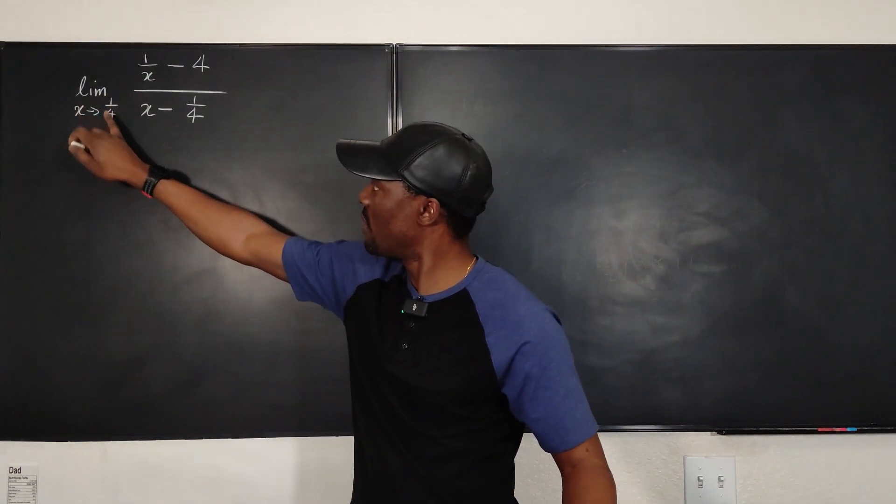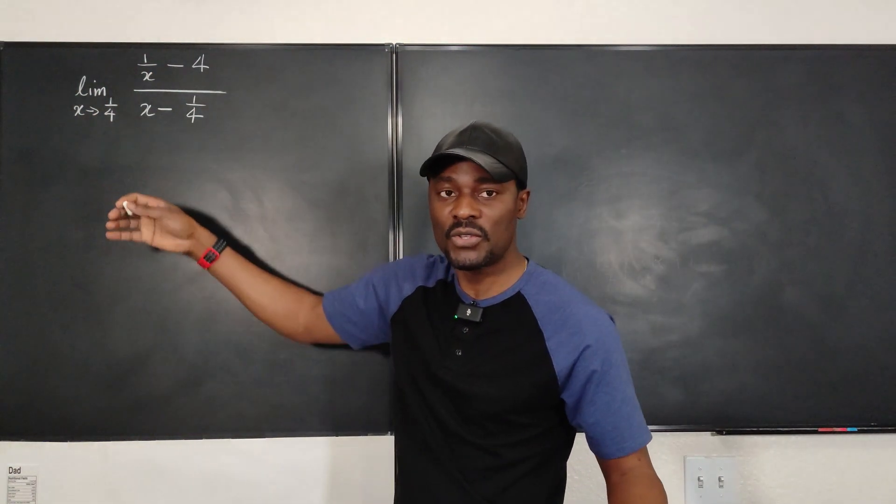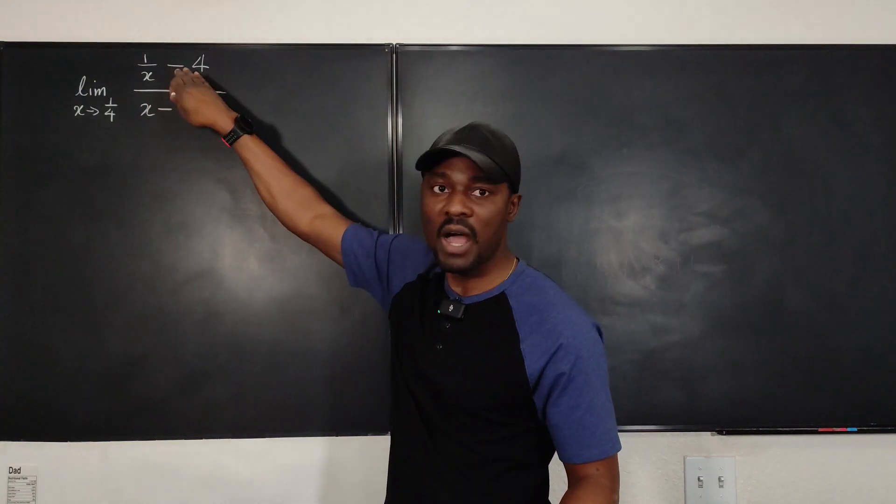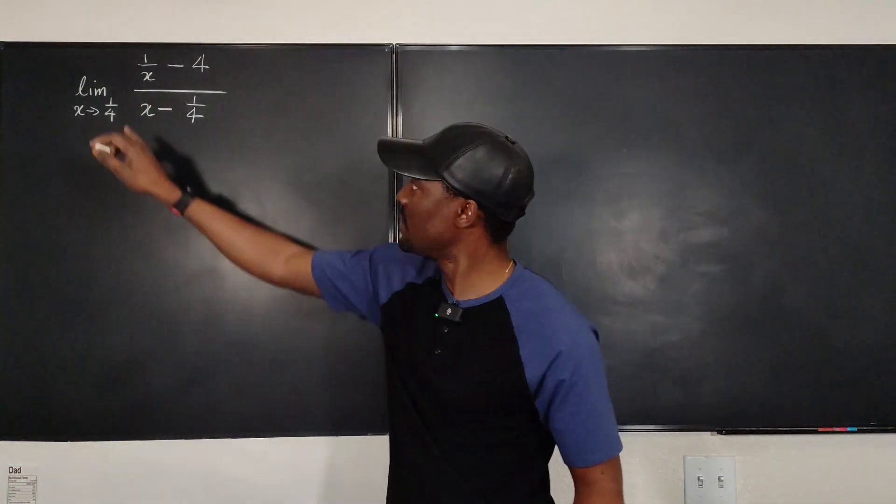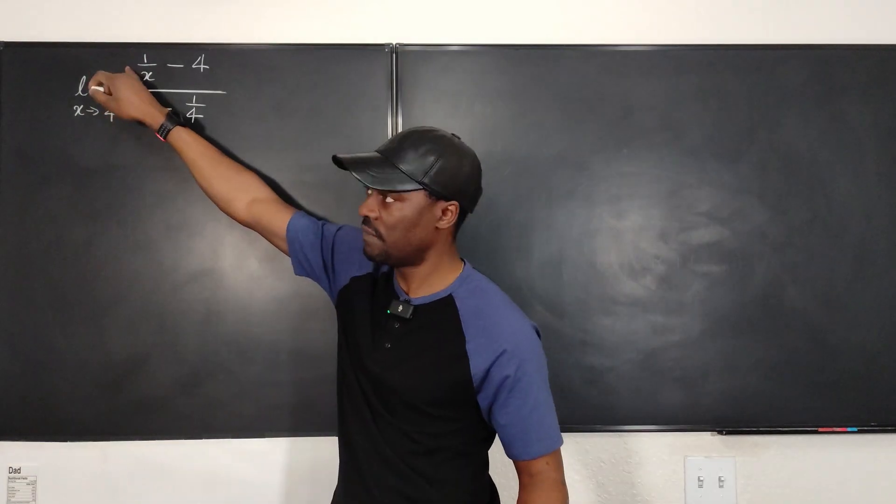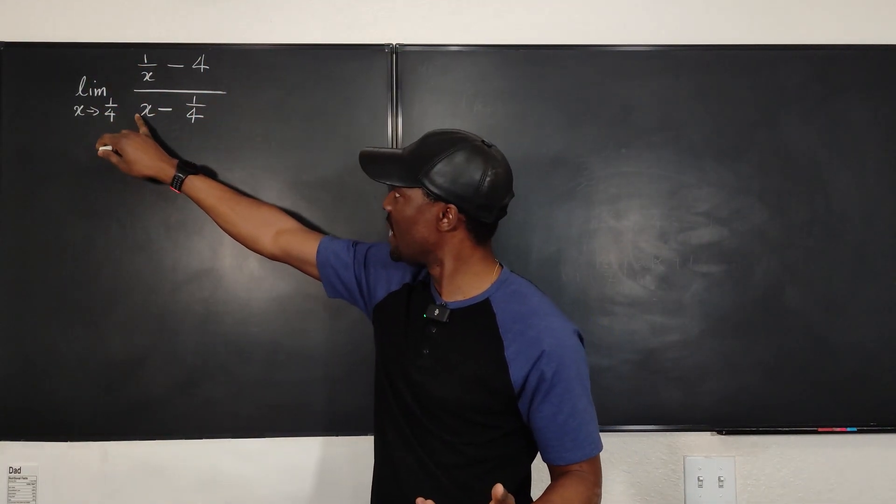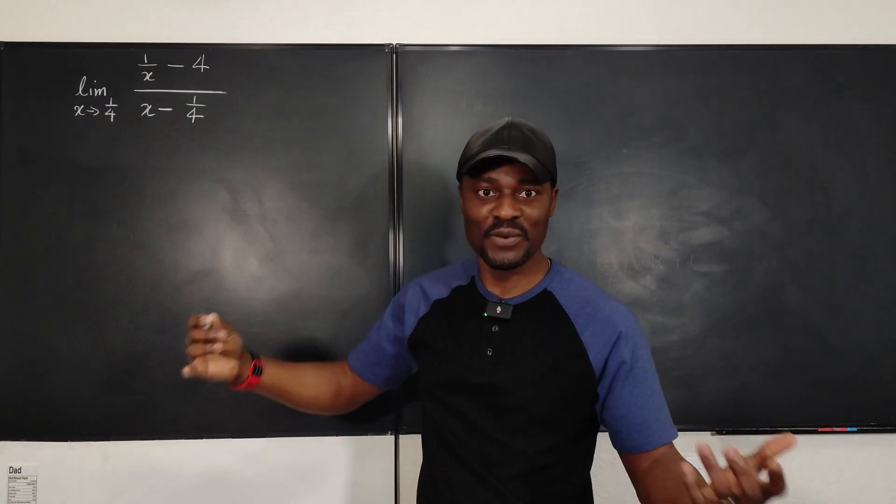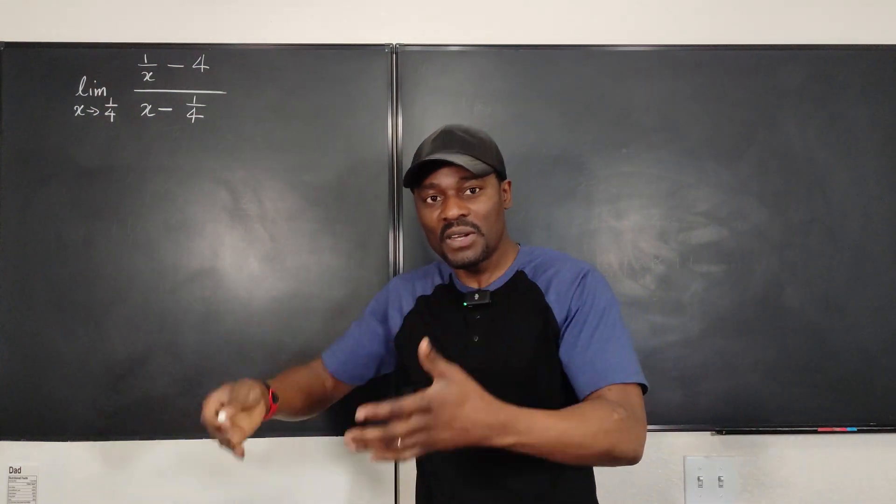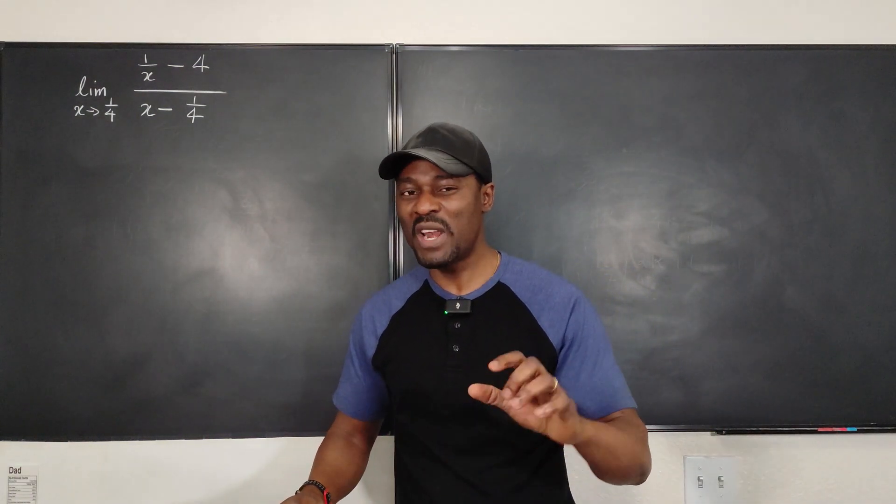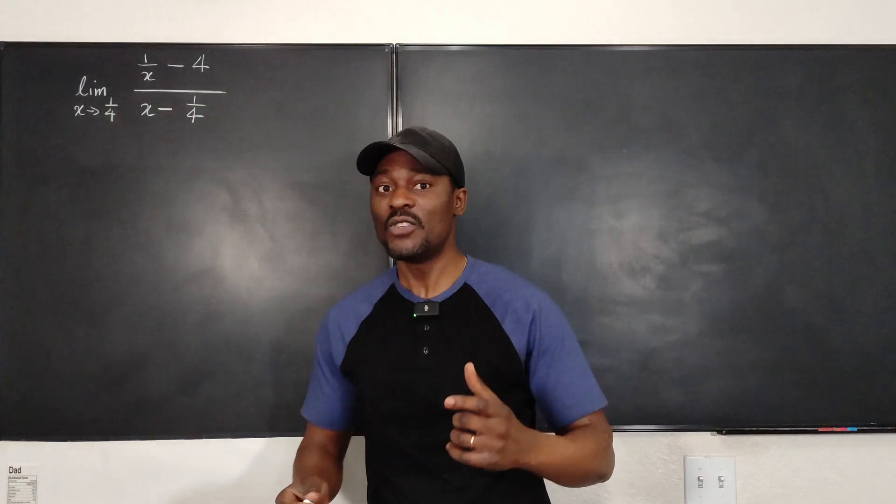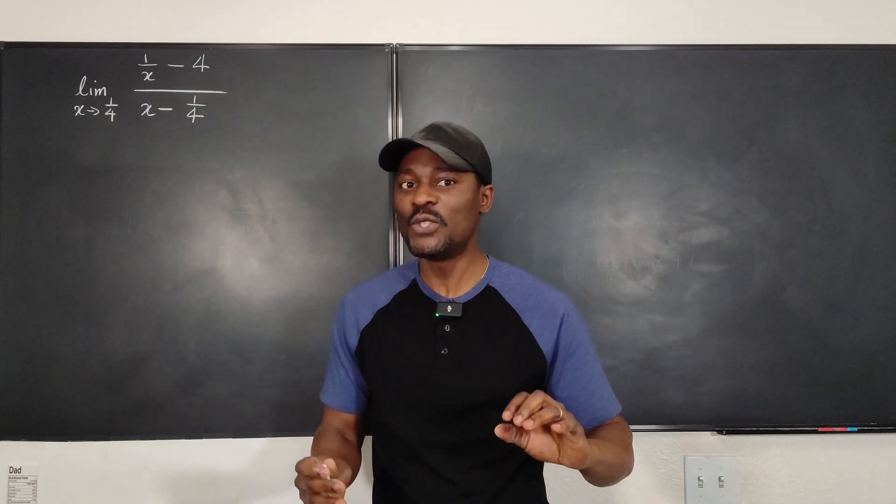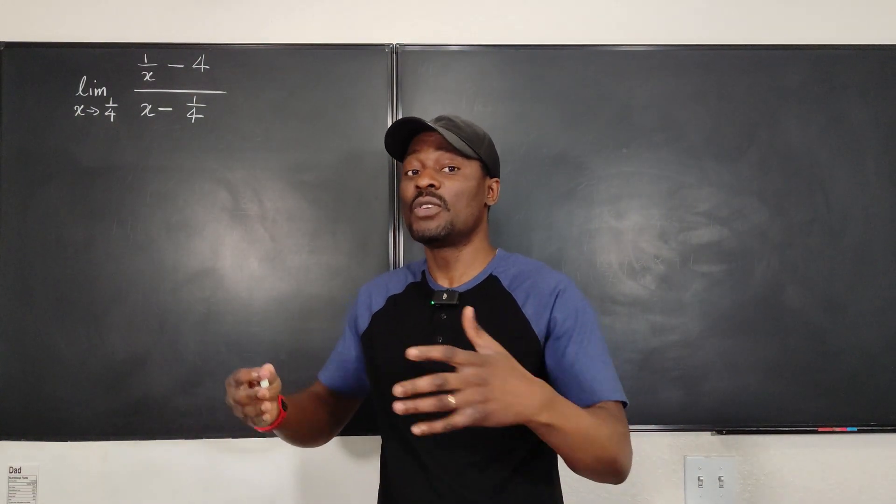It's because if you plug in 1/4 to the top and the bottom, you're going to end up with 0 on top and 0 under, because 1 over 1/4 is 4. So 4 minus 4 gives you 0, and then 1/4 minus 1/4 is 0. So the function itself is undefined. And whenever you get 0 over 0, it means you can either use L'Hôpital's Rule or you can do some algebraic manipulation to get the limit.